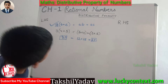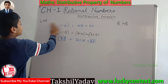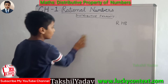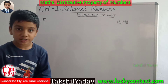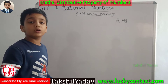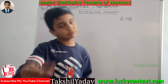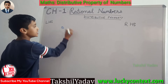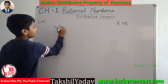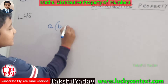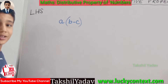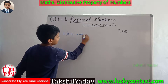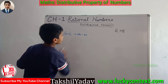Now comes the second formula — the distributive property of multiplication over subtraction. The formula is: A, the first integer, multiplied by B, the second integer, minus C, the third integer. When we solve this formula, we get AB minus AC.